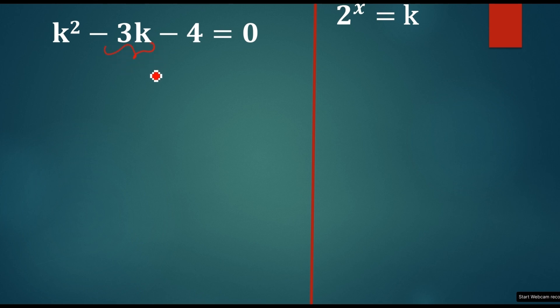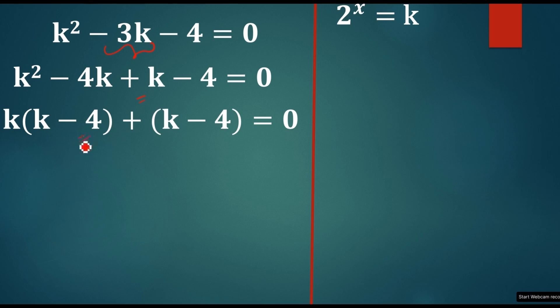Now we'll solve this one by using the factorization method. The middle term can be split to like minus 4k and plus k so that it won't change like minus 3k here. And if you take the common from the first is k then we'll get k minus 4 and if it is again one more term is k minus 4 is there here. Again, if you take k minus 4 common from these two terms you'll get like k plus 1 into k minus 4, right?